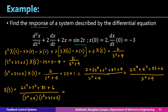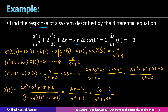To express X(s) as a sum of partial fractions, since both factors are quadratics, the numerators must be linear: (As + B)/(s² + 4) + (Cs + D)/(s² + 2s + 2). The rule is that the degree of the numerator should be one degree lower than the degree of the denominator. Because the roots of the denominators are complex conjugates, we use the conventional method of equating coefficients rather than the shortcut method.